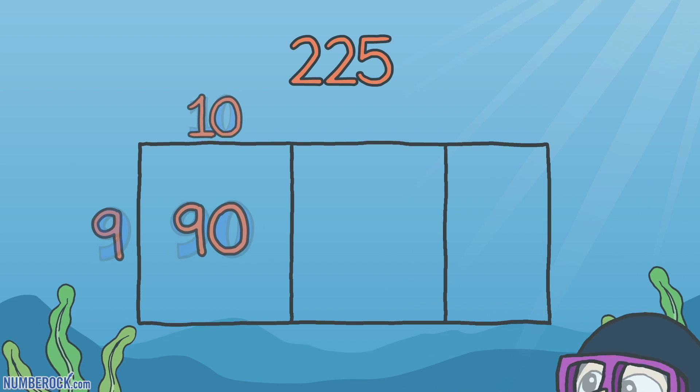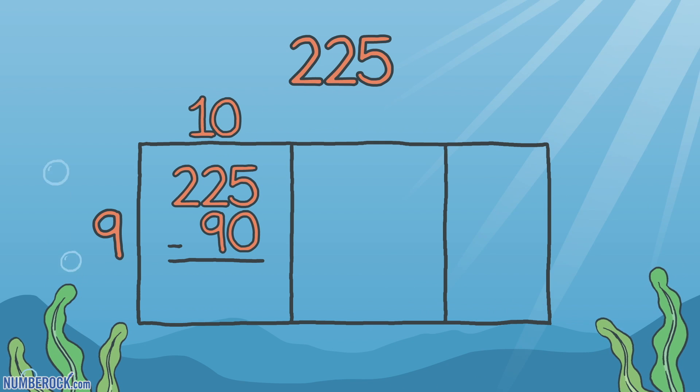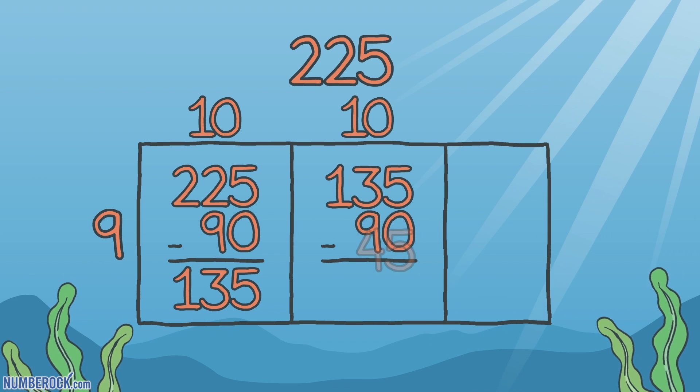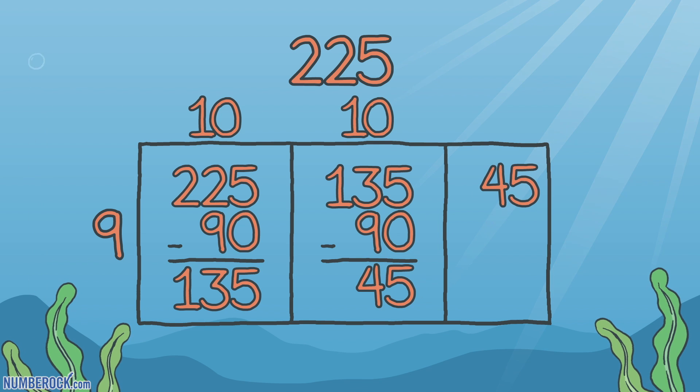Let's take 9 tens and subtract in another box. The difference we get shows us 45 left, a perfect number to divide the rest. 5 groups of 9 is 45.